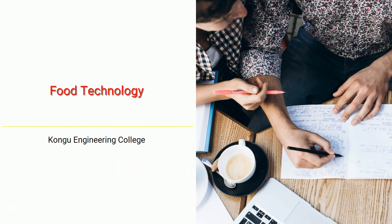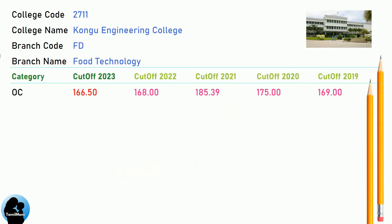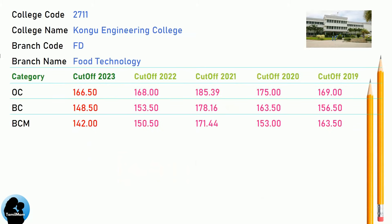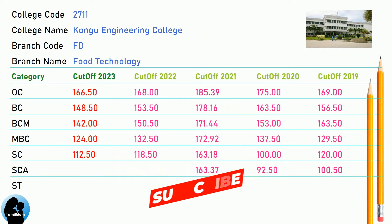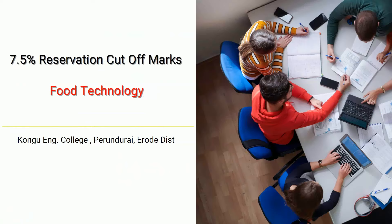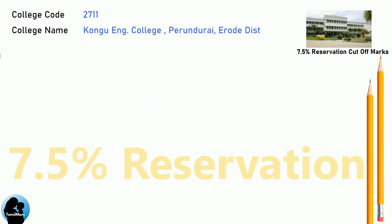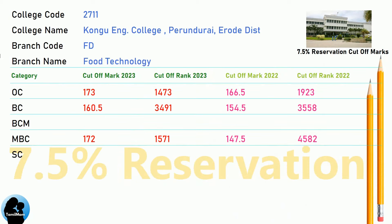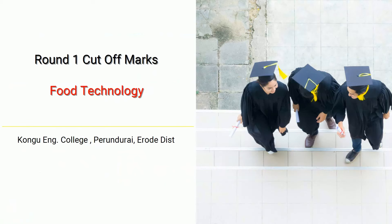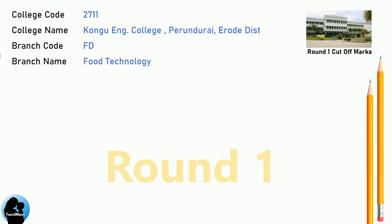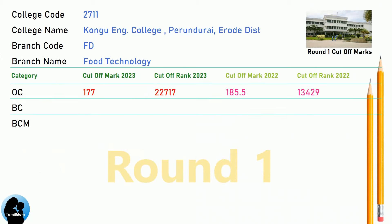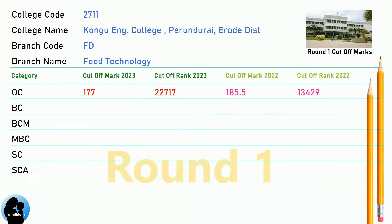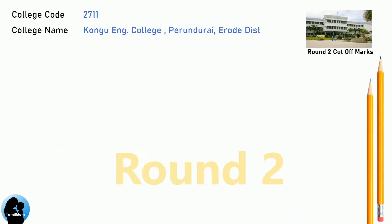BNA Cut-Off for Kongu Engineering College in Food Technology. BNA 7.5 Reservation Cut-Off for Kongu Engineering College in Food Technology. BNA Round 1 Cut-Off for Kongu Engineering College in Food Technology. BNA Round 2 Cut-Off for Kongu Engineering College in Food Technology.